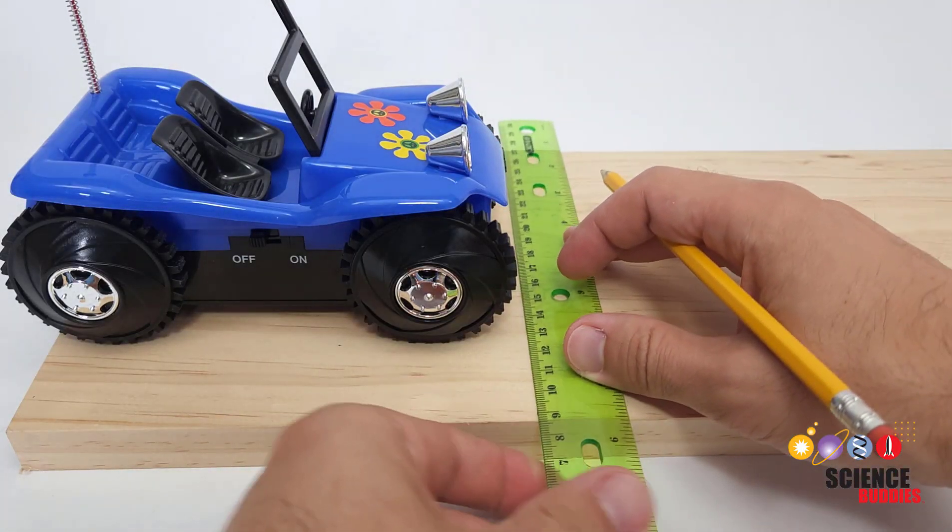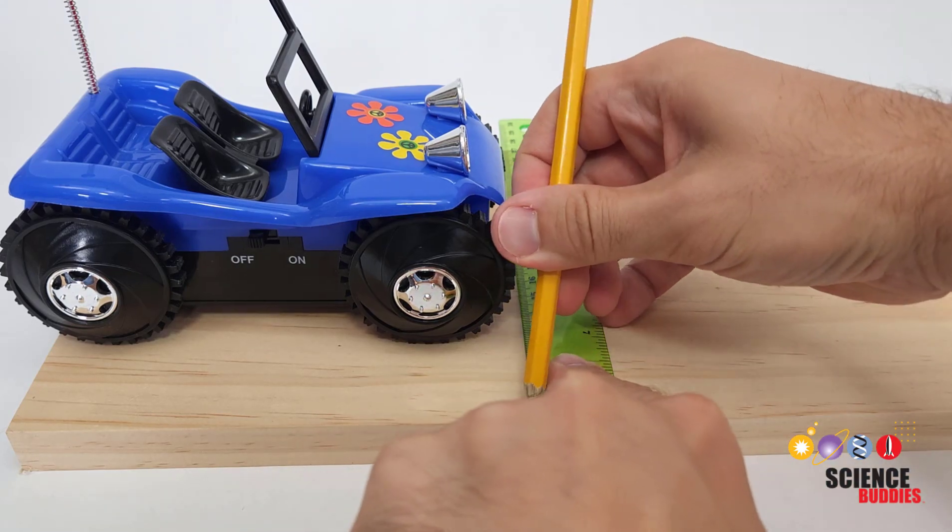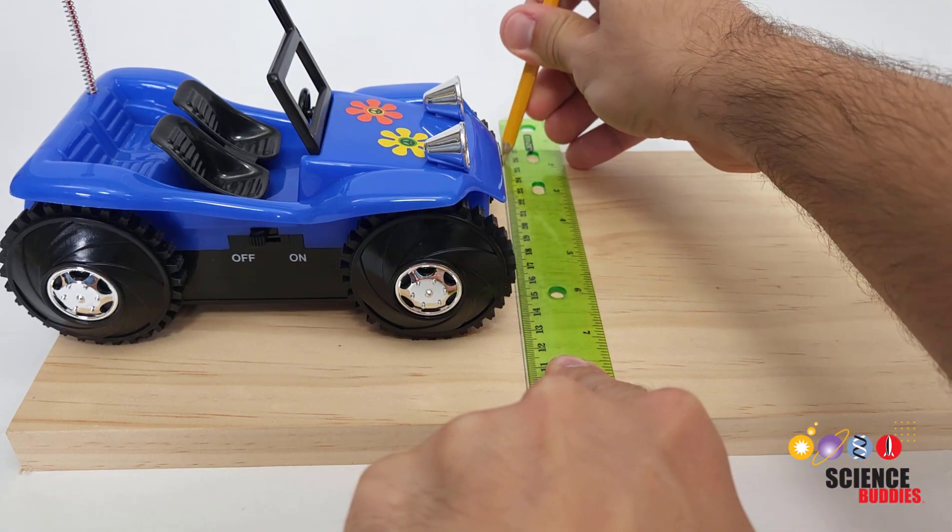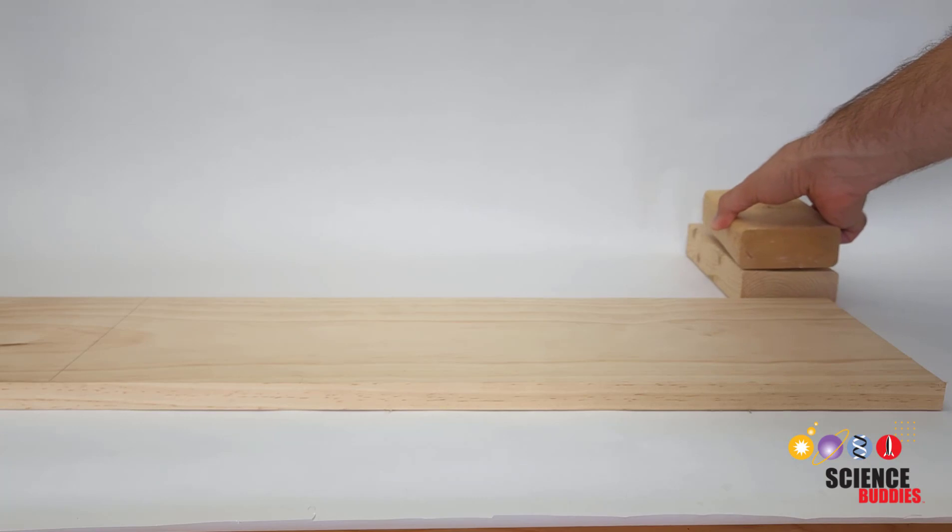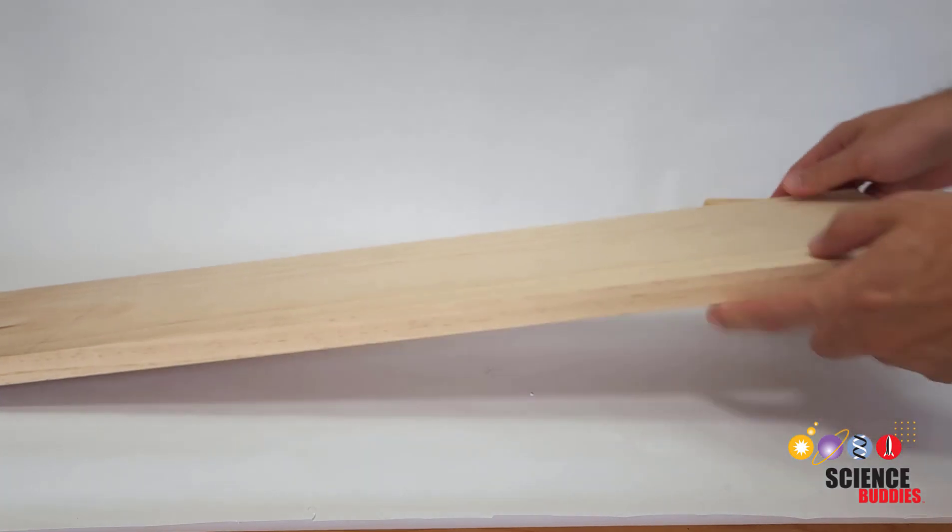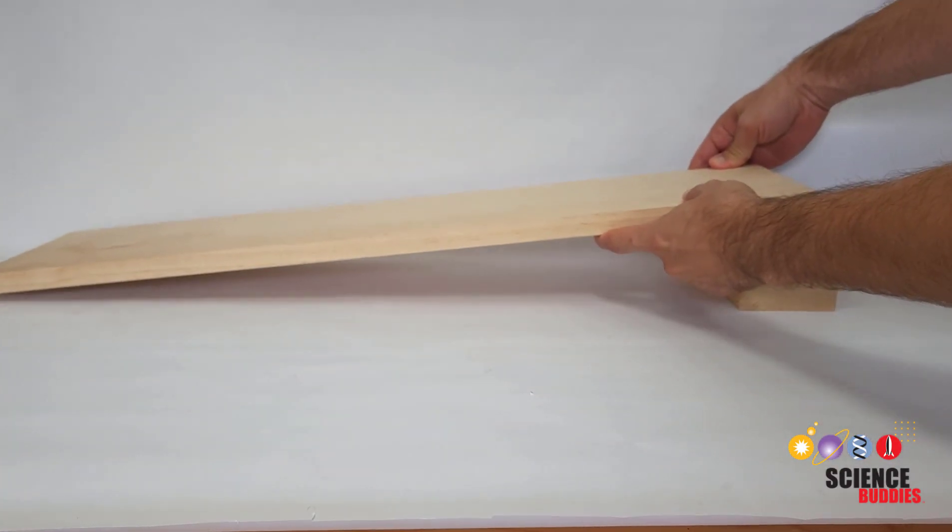Place the car at one end of a wooden board and use a ruler and pencil to draw a start line at the front of the car. Prop the other end of the board up on something like blocks of wood, thick books, or a cardboard box to make a ramp.